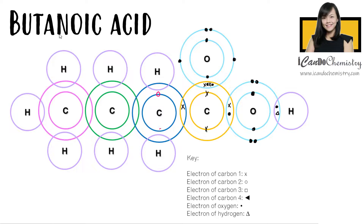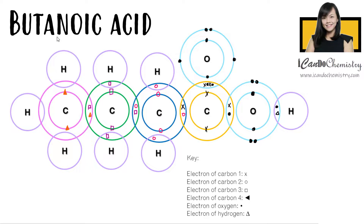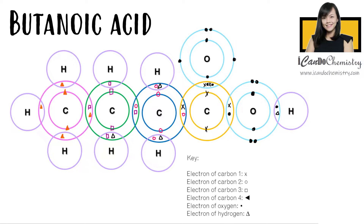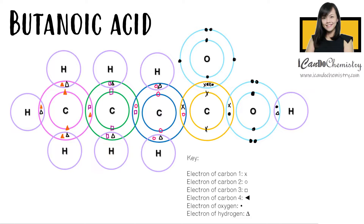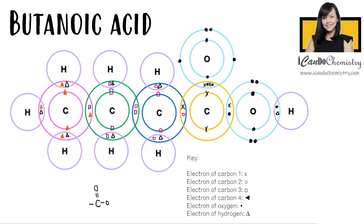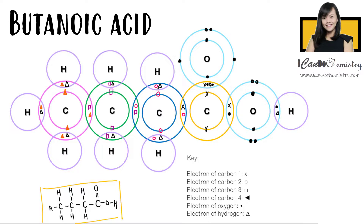What about butanoic acid, which has four carbons? There is one carbon in the carboxyl functional group, so we just need to add three more carbons — now there are altogether four carbons in this acid. The carbons will then fulfill the octet rule by using remaining electrons to form bonds with hydrogen. This is the dot-and-cross diagram of butanoic acid. Let's replace each electron pair with a bond — we have achieved the structure of butanoic acid.